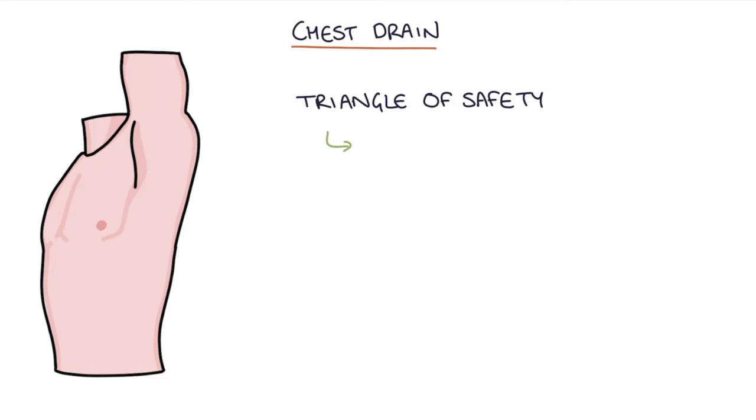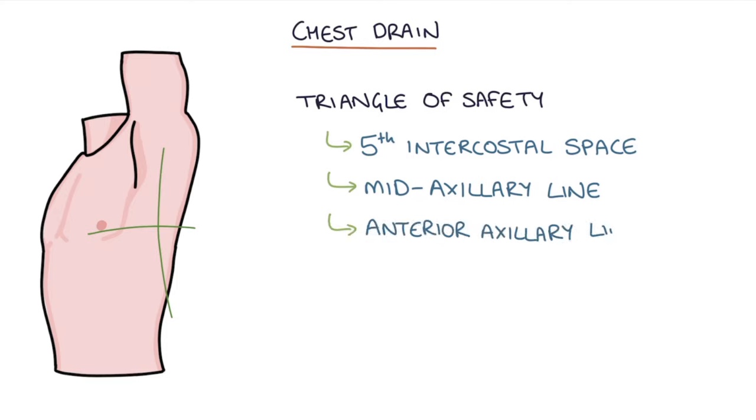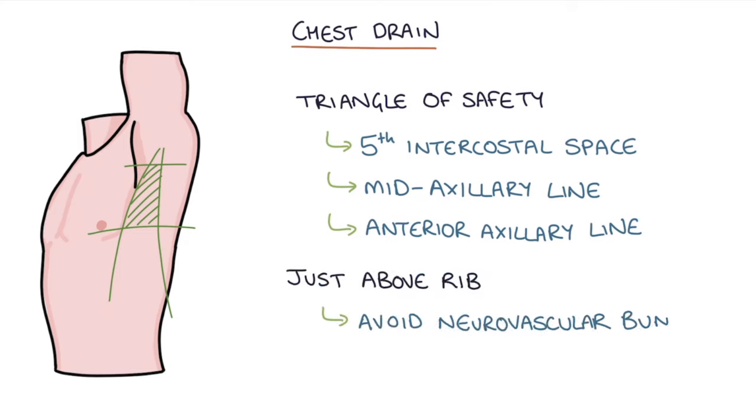This triangle is formed by the fifth intercostal space or inferior nipple line, the mid-axillary line or lateral edge of the latissimus dorsi, and the anterior axillary line or lateral edge of the pectoris major. The needle is inserted just above the rib to avoid the neurovascular bundle that runs just underneath each rib. Once the chest drain is inserted you need to obtain a chest x-ray to check the positioning.